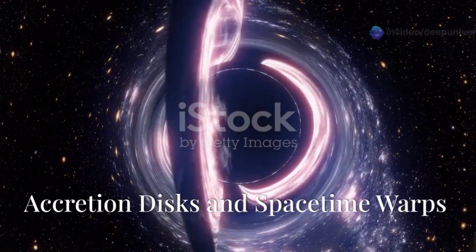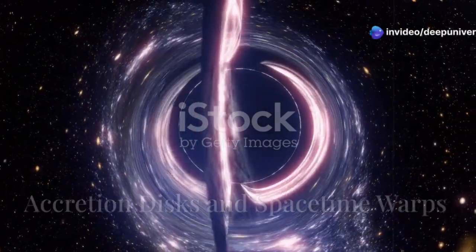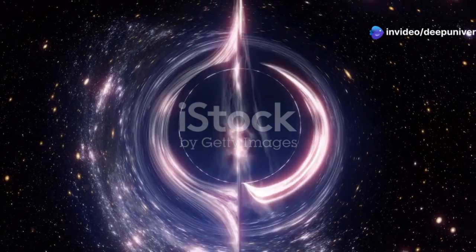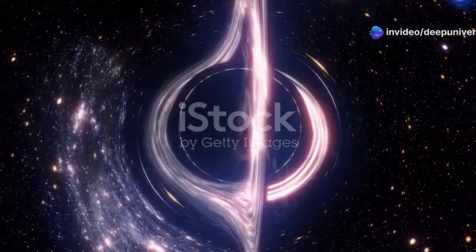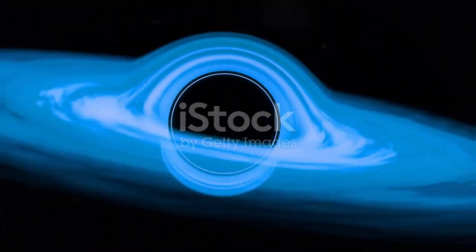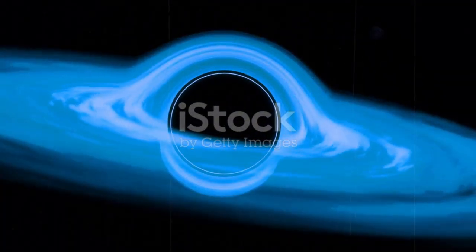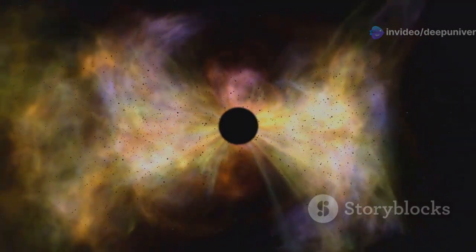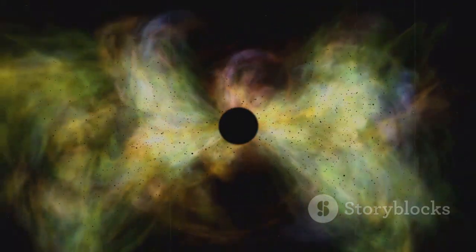The bright rings surrounding black holes in these images are not the black holes themselves. These rings are actually composed of material that is being drawn towards the black hole, forming what is known as an accretion disk. They are swirling clouds of gas and dust heated to incredible temperatures by the immense gravitational pull. This intense gravitational force causes the material to spiral inward, creating a dynamic and energetic environment.